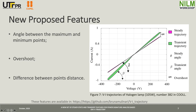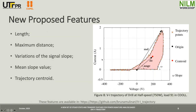The same applies for the angles. Length is the sum of all points in the trajectory, all points in orange. The maximum distance is the maximum vector using all points of the trajectory and the center. The variations of signal slopes are the number of variations from positive to negative in the curve. Mean slope value is the mean of all slopes between each two points in the curve.